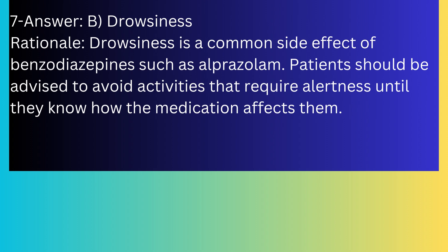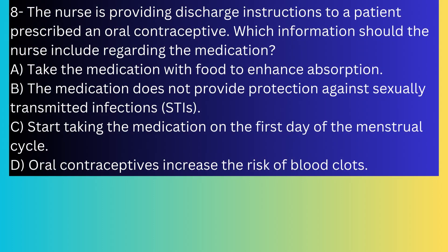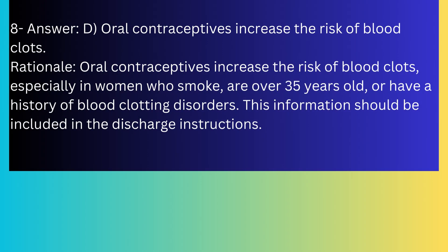Question number eight: The nurse is providing discharge instructions to a patient prescribed an oral contraceptive. Which information should the nurse include? A) Take the medication with food to enhance absorption, B) The medication doesn't provide protection against sexually transmitted infections, C) Start taking the medication on the first day of the menstrual cycle, D) Oral contraceptives increase the risk of blood clots. The answer is D. Oral contraceptives increase the risk of blood clots, especially in women who smoke, are over 35, or have a history of blood clotting disorders. This information should be included in the discharge instructions.